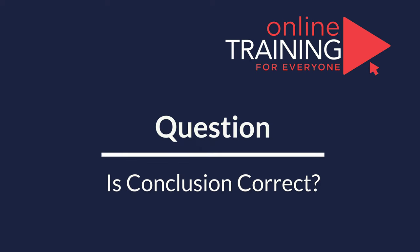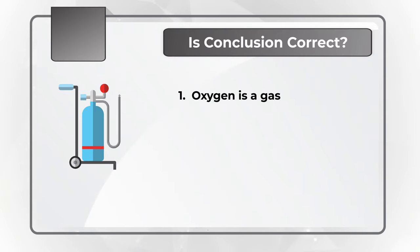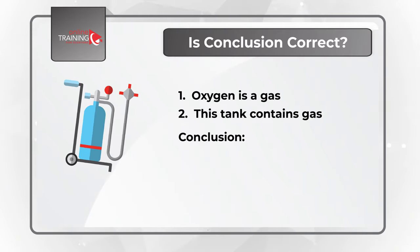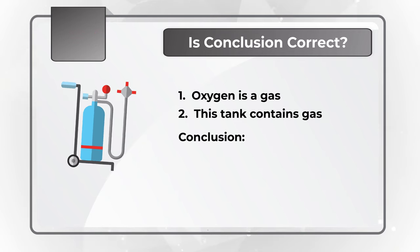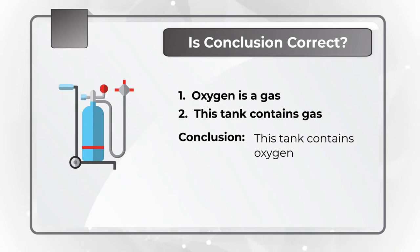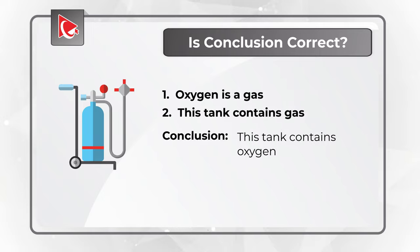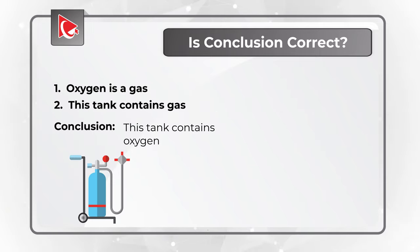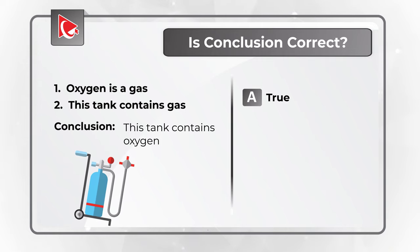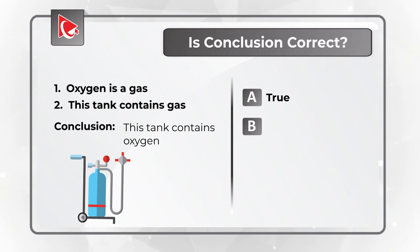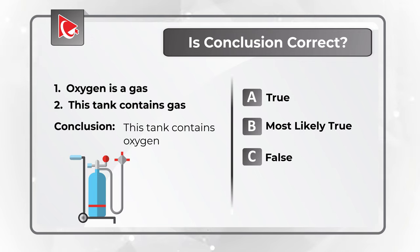Let's look at a question where you need to come up with a logical conclusion. Statement 1: oxygen is a gas. Statement 2: this tank contains gas. The conclusion drawn is that this tank contains oxygen. You need to determine if this conclusion is correct. Choices: A: true, B: most likely true, C: false, D: cannot determine.